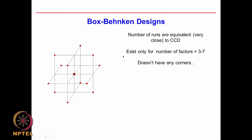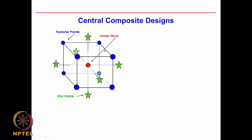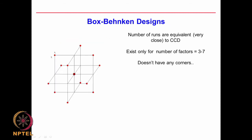Then we have the Box-Behnken design. This is also similar, the only difference is that instead of the corner points it takes the points at the edges of the cube. That is the only difference — it does not have the corners, it takes the edges of the cube.